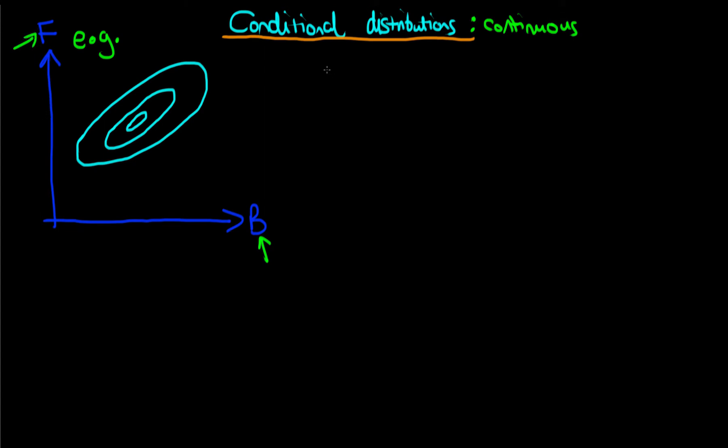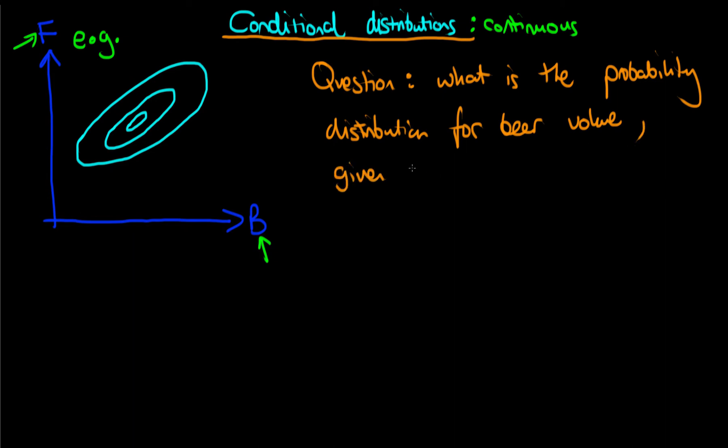And given this example, a question that we might be interested in is what is the uncertainty? Another way of saying uncertainty is to say what is the probability distribution for an individual's level of beer that they drink, so for beer volume, given that we know that the body fat of that individual is equal to 10 kilograms.